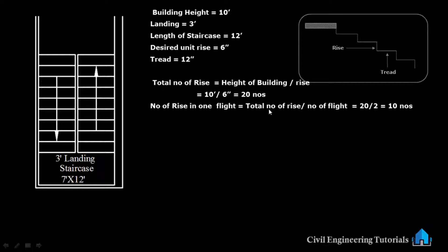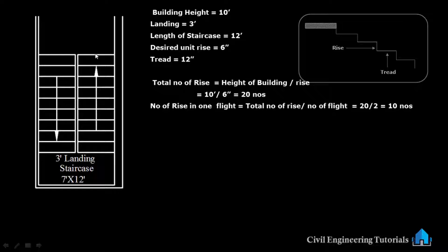Total number of rises is building height divided by unit rise, which gives 20. Divided by number of flights — 2 — so we get 10 numbers. Number of rises in one flight is 10 numbers. We can see this in elevation: 1, 2, 3, 4, 5, 6, 7, 8, 9, and 10. The white lines are risers, and between two lines is the tread.